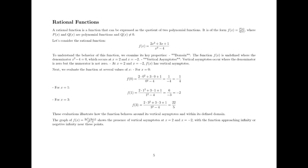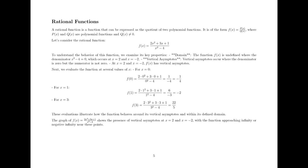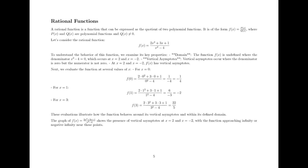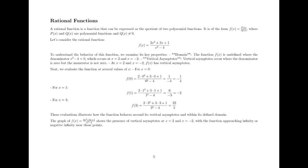Let's explore rational functions. A rational function is a function that can be expressed as the quotient of two polynomial functions. It is of the form f(x) = (2x² + 3x + 1) / (x² - 4), where p(x) and q(x) are polynomial functions and q(x) is not equal to 0.